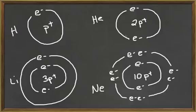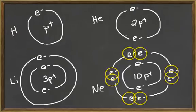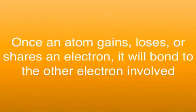Helium, on the other hand, is a stable atom. Its only energy level is filled with two electrons. Neon, as well, is a stable atom with a filled outer energy level of eight electrons. Reactive atoms with unfilled energy levels can become stable if they gain, lose, or share electrons to fill their outermost energy level. After they do this, the atoms involved will then be held together by a chemical bond.